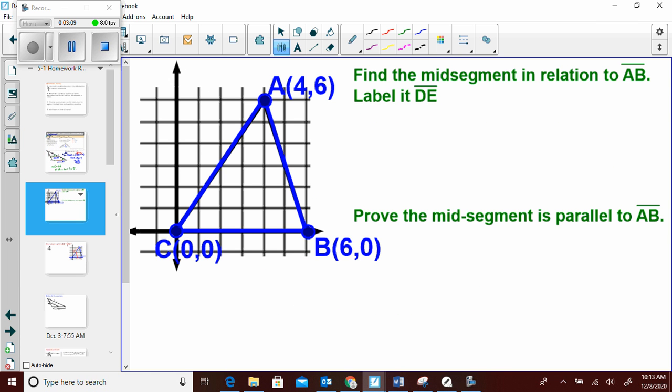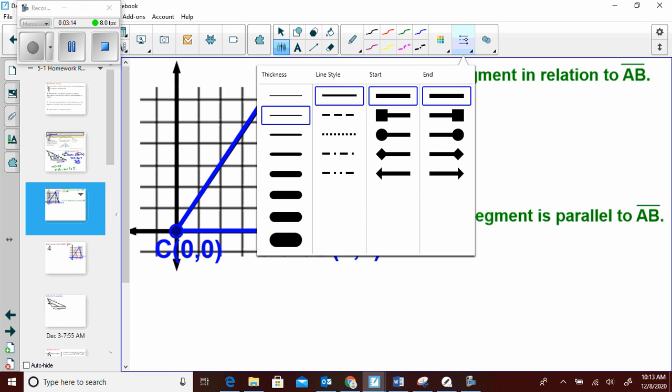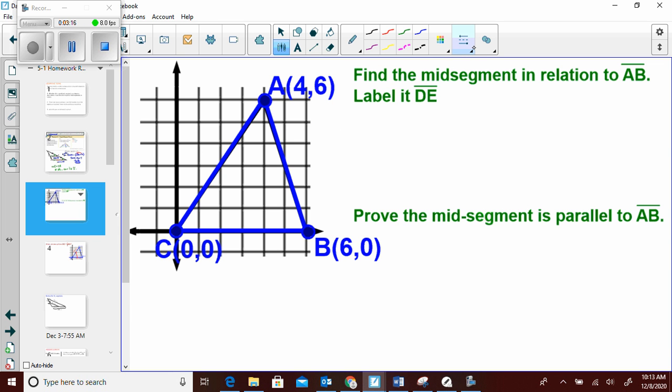Now, let's look at how it works and do some coordinate geometry with it. We want to find the mid-segment in relation to AB. So if I want to find that, that means I need the midpoint of AC. 4 plus 0 over 2. 6 plus 0 over 2. 2, 3.